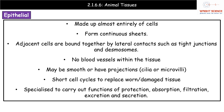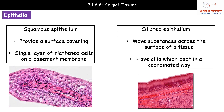Epithelial tissues have very short cell cycles because they're exposed to quite a lot of wear and tear. As a result, we need to replace worn or damaged tissue quite quickly. They are also specialised to carry out key functions such as protection, absorption, filtration, excretion and secretion — because all of those different regions that have epithelial tissues have one of those roles involved in their function.